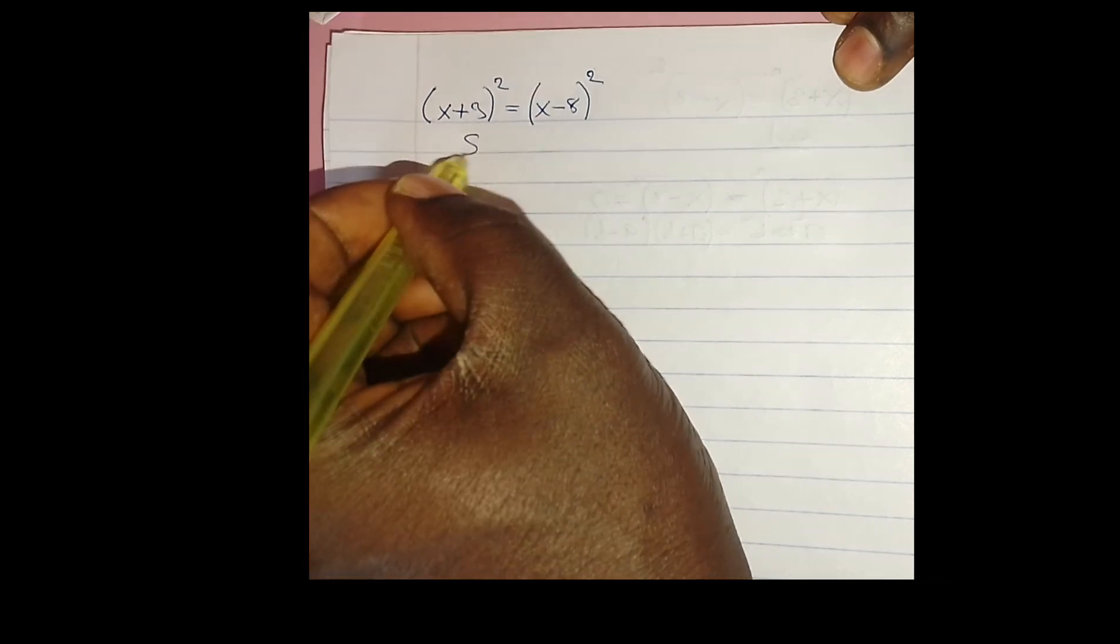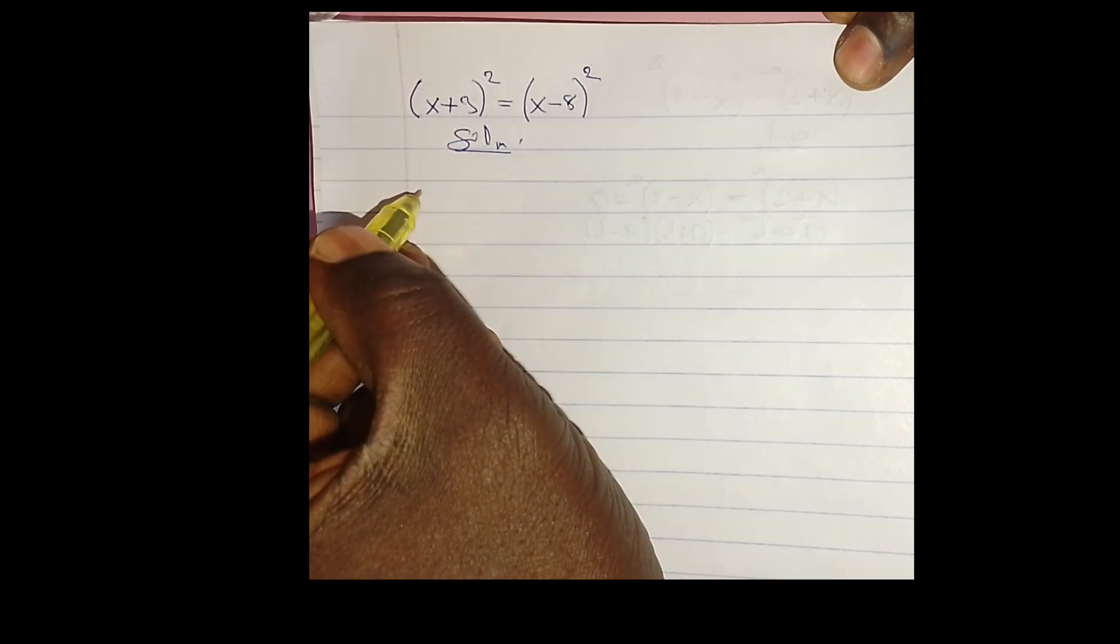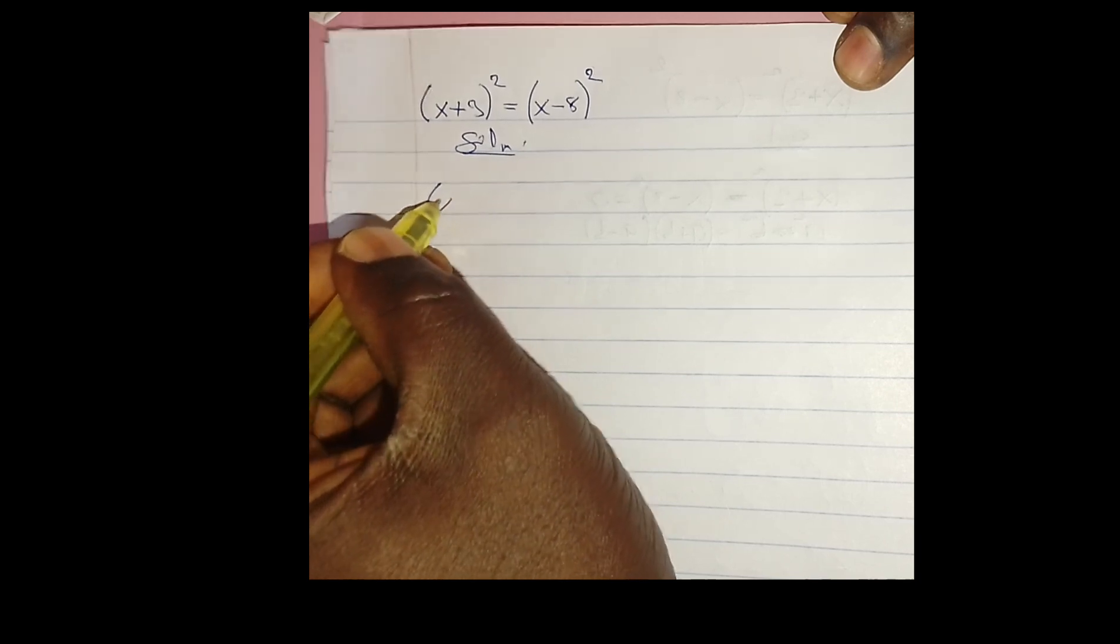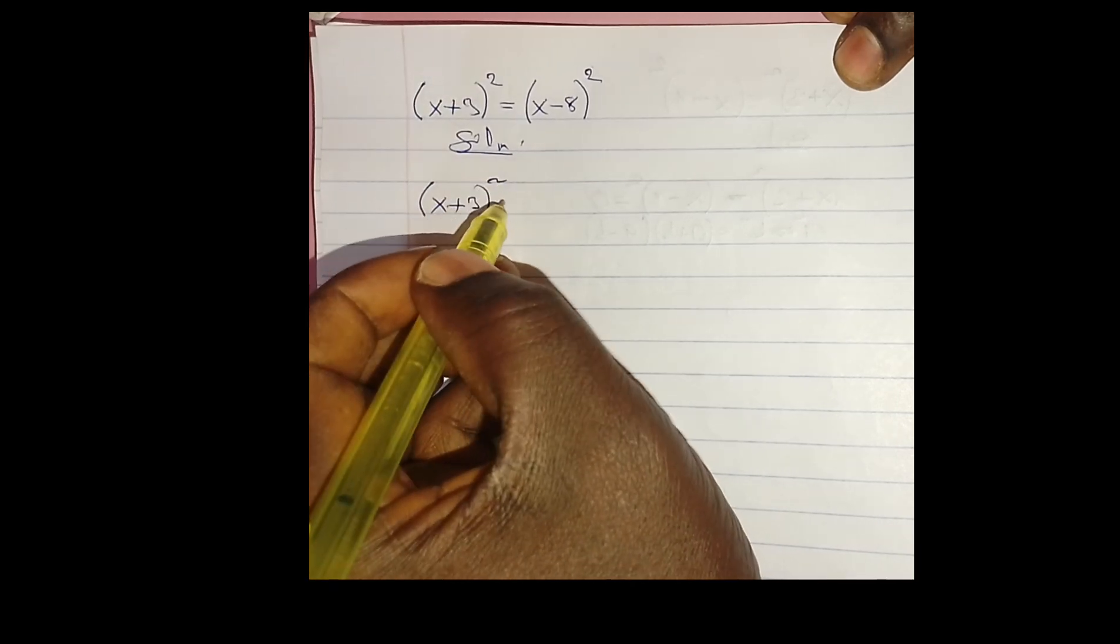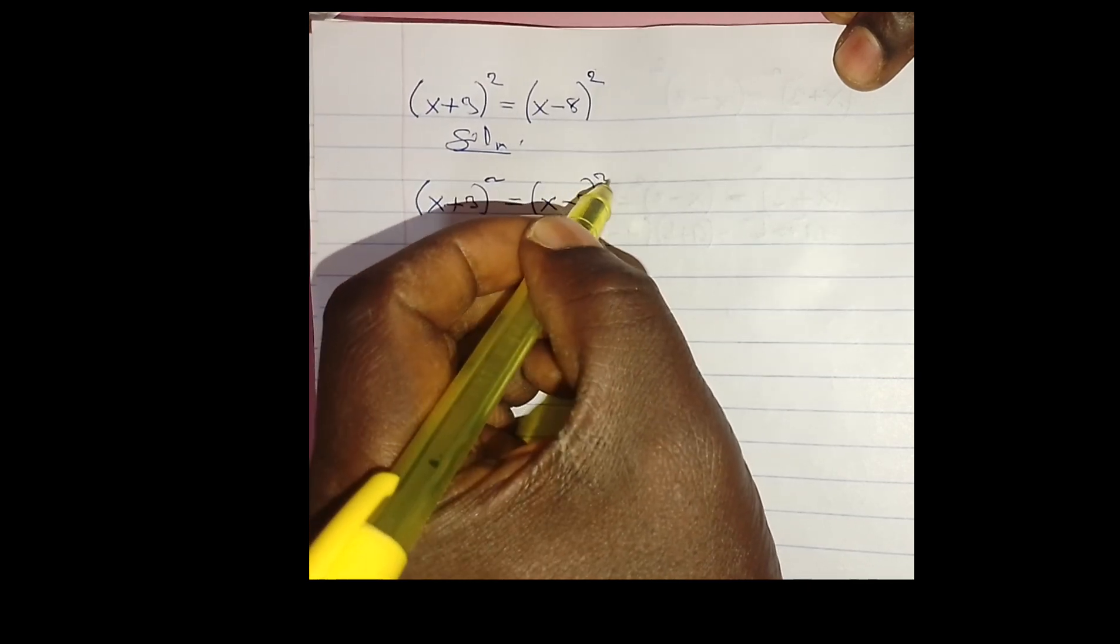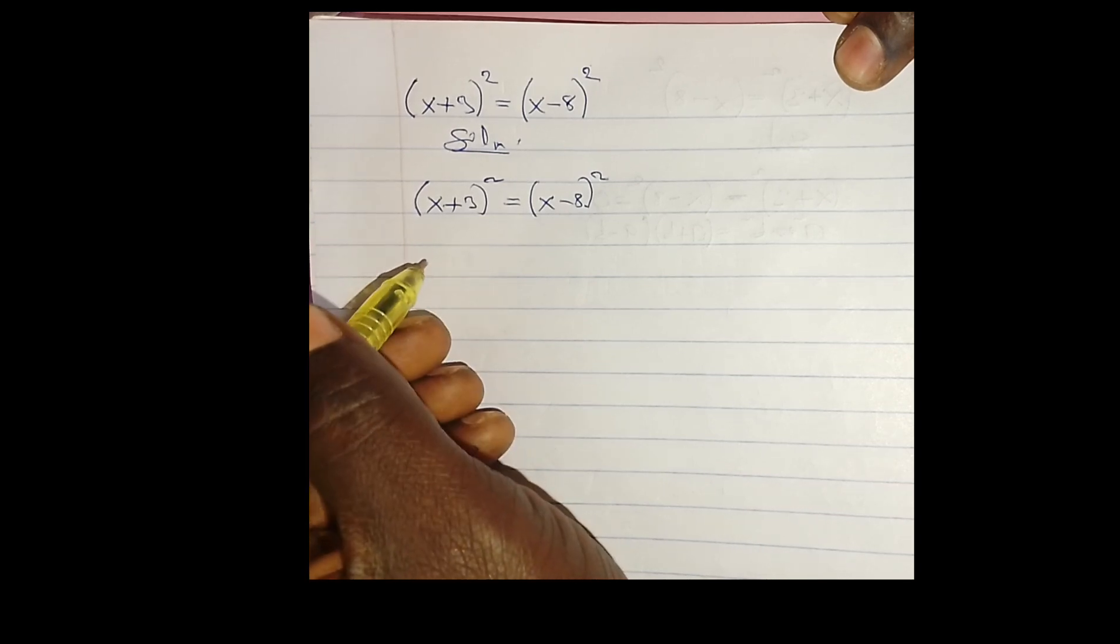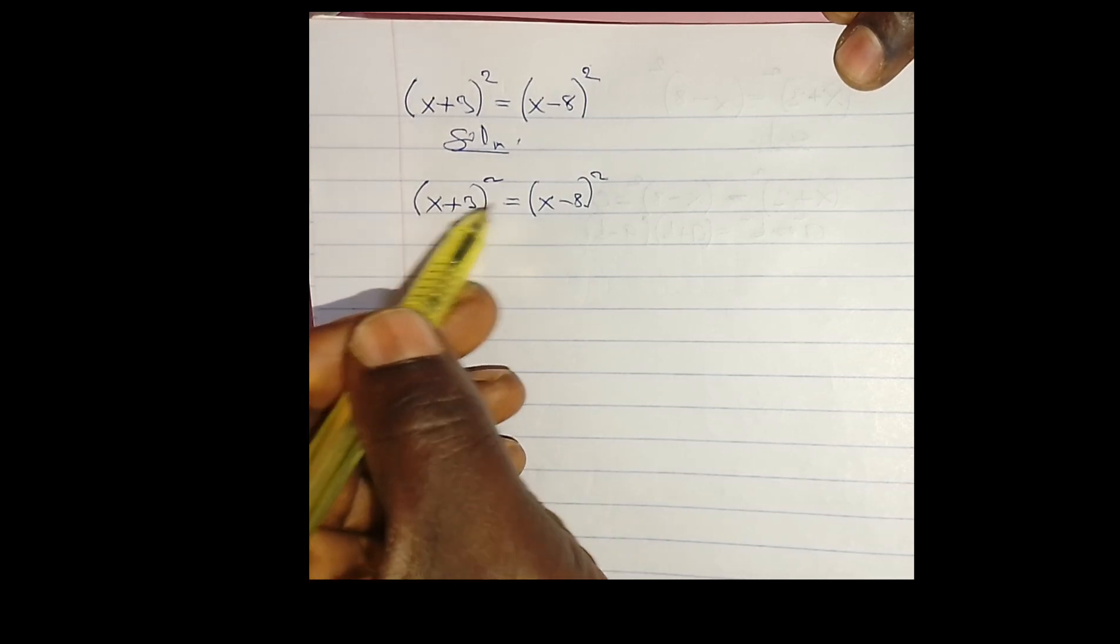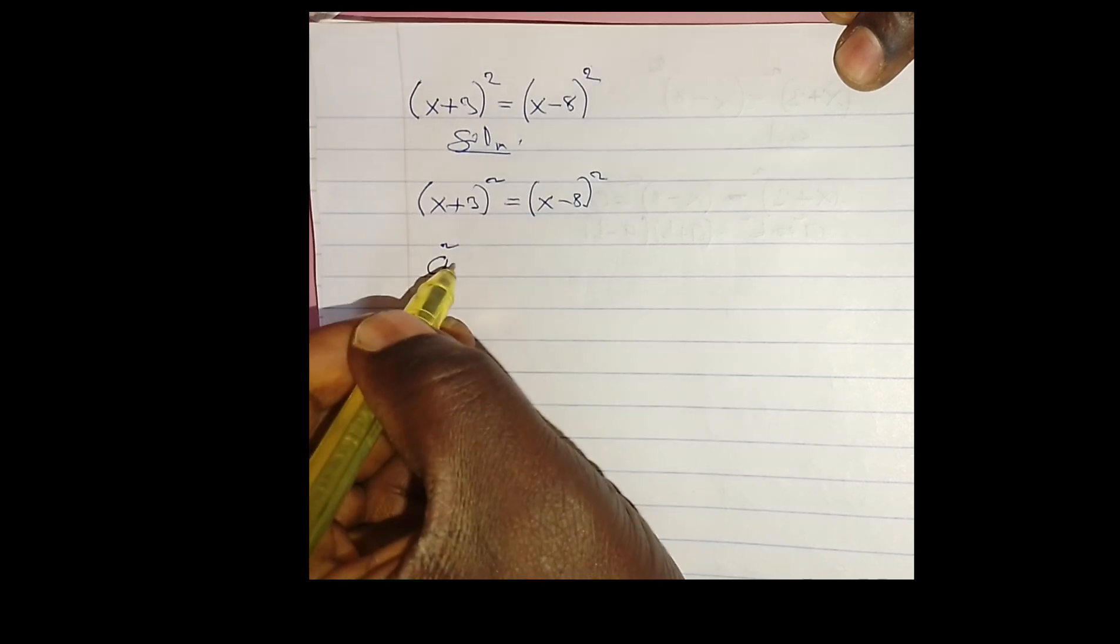Let's get started. Solution: we have (x + 3)² = (x - 8)². I want to let everything be equal to 0 because I want to write this particular equation based on a² - b² equals (a - b)(a + b).